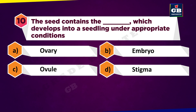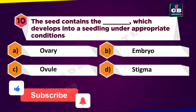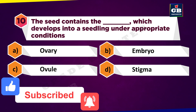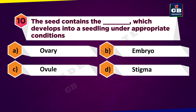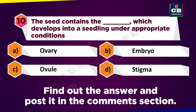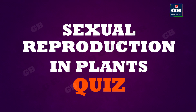The seed contains the dash which develops into a seedling under appropriate conditions. A: Ovary. B: Embryo. C: Ovule. D: Stigma. Find the answer for the last question and post it in the comment section.